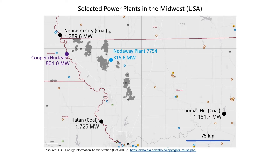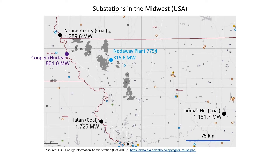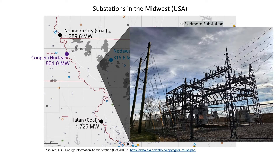The large gray areas you're seeing here on the map are wind turbines. Every little purple ring you're now seeing is the location of a substation. For example, this is what one of them looks like — this is the Skidmore substation. Substations have two basic functions: they transform voltages and they protect the grid.